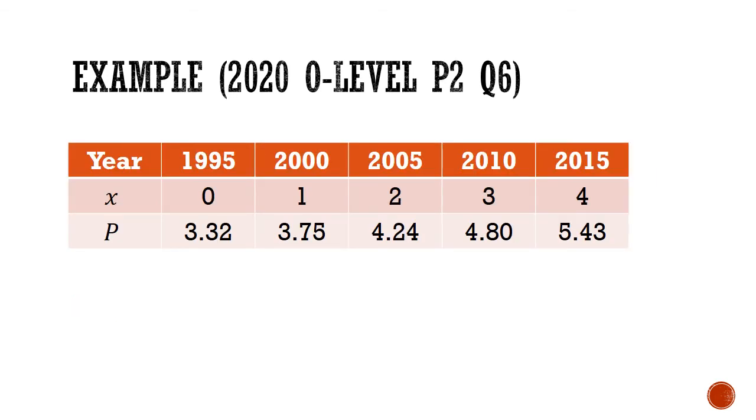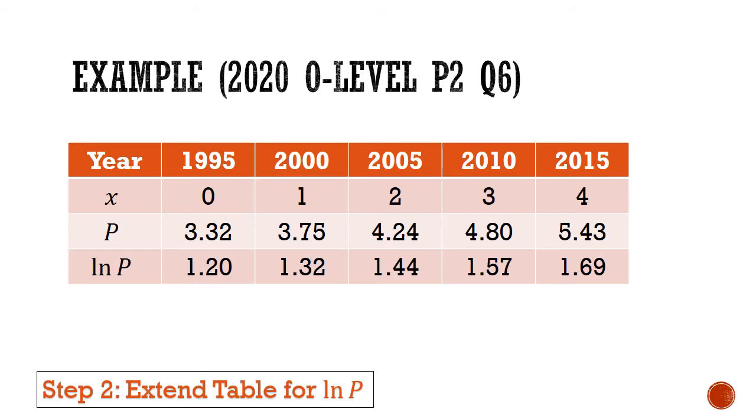Next, we go back to the table, and we're going to add in another row for ln P. So after we've extended the table, bear in mind that the row with x will form our big X, and the row of all the values for ln P will form our big Y.